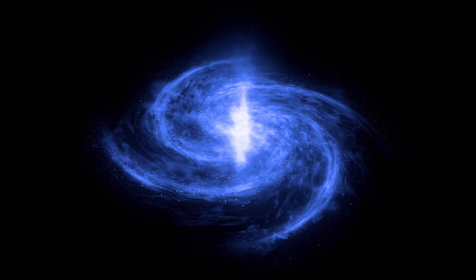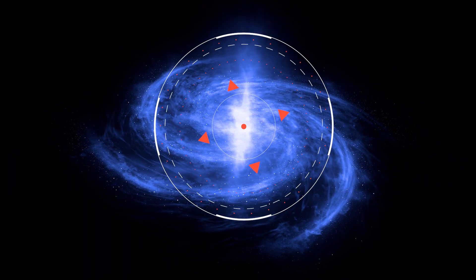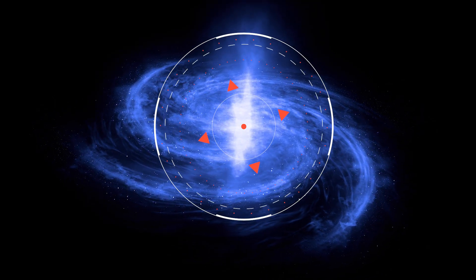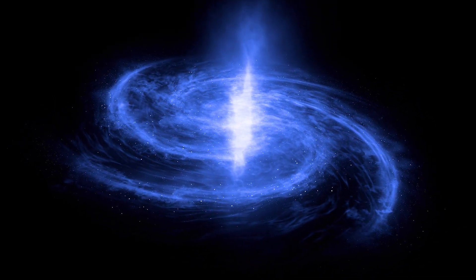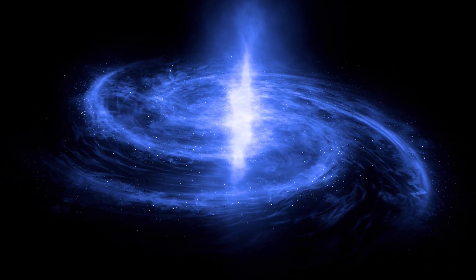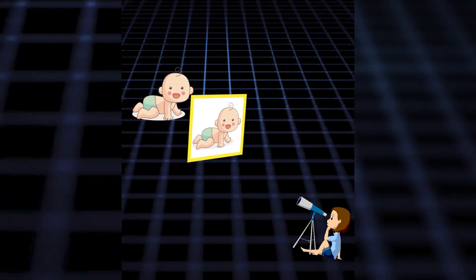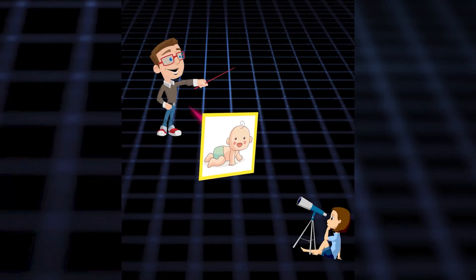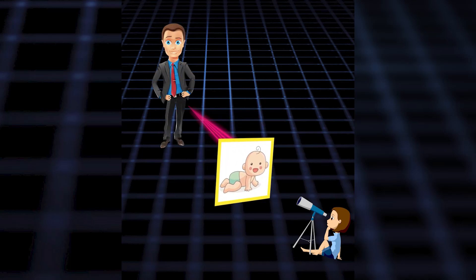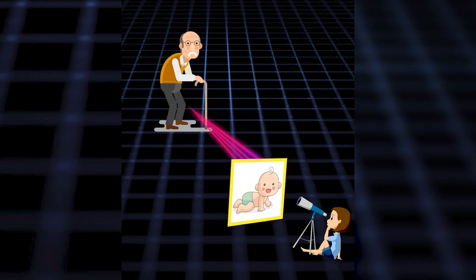The supermassive black hole sits at the center of a very young galaxy, but since 12.7 billion years have passed, the galaxy is pretty old now. However, to us, it appears as young because we're seeing light from the object as it appeared one billion years after the Big Bang.